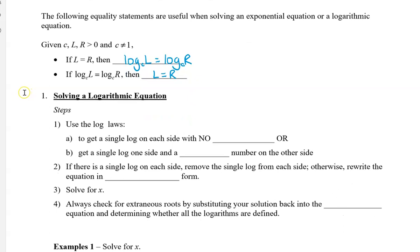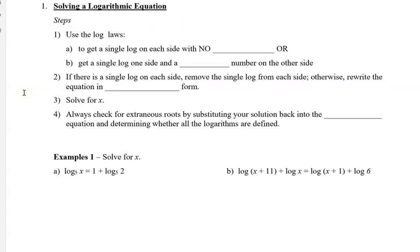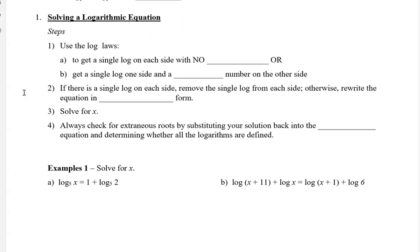Let's take a look at some steps to solve a logarithmic equation. The first step is to use the log laws. What we want to do is to get a single log on each side with no coefficients. If there are coefficients, make sure you move them to be the exponent on the value. Or the other option is to get a single log on one side and a constant number on the other side.